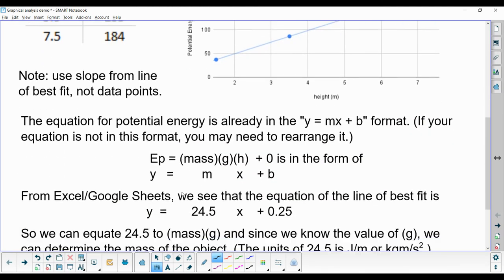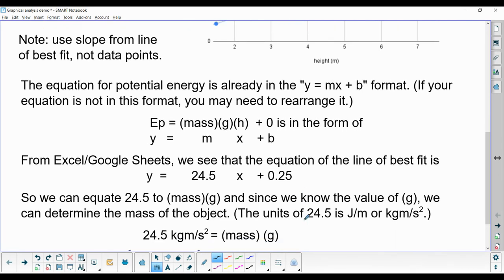The equation for potential energy is already in the y equals mx plus b format. As you remember, potential energy has an equation: Ep equals mass times g times h. It's already in the format of y equals mx plus b. We can see potential energy is equivalent to the y variable, and the height is really the same as the x variable.